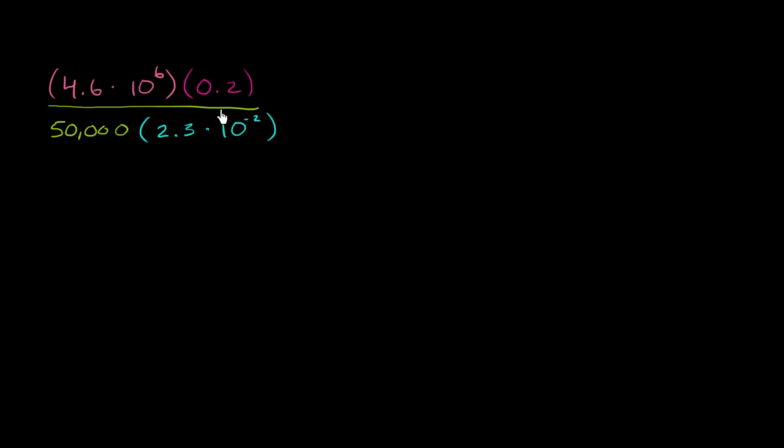So this part right over here, 0.2, is not in scientific notation. In order for it to be scientific notation, it would have to be some number between 1 and 10, not including 10 - so greater than or equal to 1, less than 10 - being multiplied by some power of 10. And this is clearly less than 1.